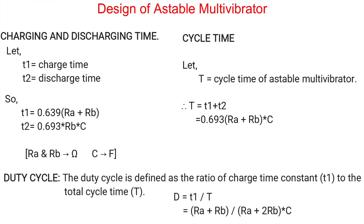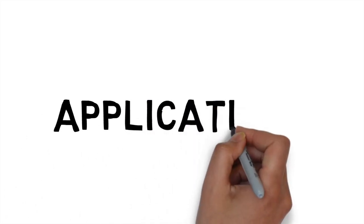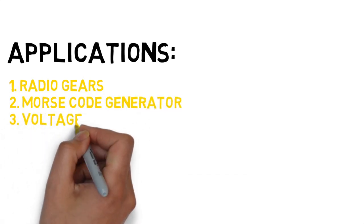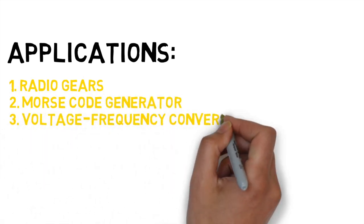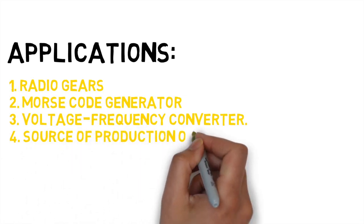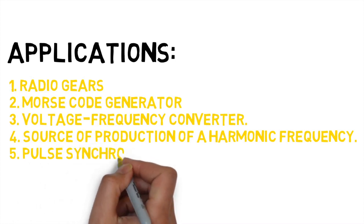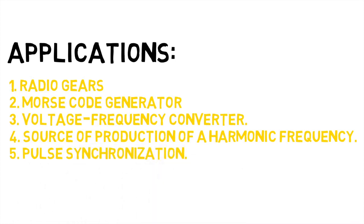Let's see where we can use A-stable multivibrator. The applications of A-stable multivibrators involve in radio gears to transmit and receive radio signals and also in time Morse code generators and some systems which requires a square wave like analog integrated circuits and TV broadcast. A-stable multivibrators also used in voltage to frequency converter. Since they produce square wave at its output, it is a source of production of harmonic frequency of higher order. They are also used in pulse synchronization.